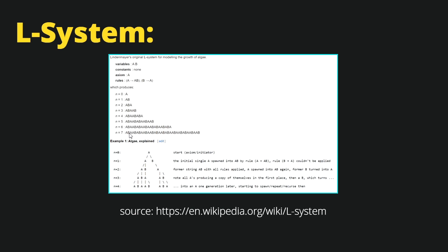How does it work? The rewriting part means that we analyze our sentence at the given iteration, and we step through every character in our word. From our rules, we select the rule that applies for each character and swap that character for the output of our rule. So that's why we have this 'A', and 'A' in the first iteration gets swapped into 'A' and 'B'.